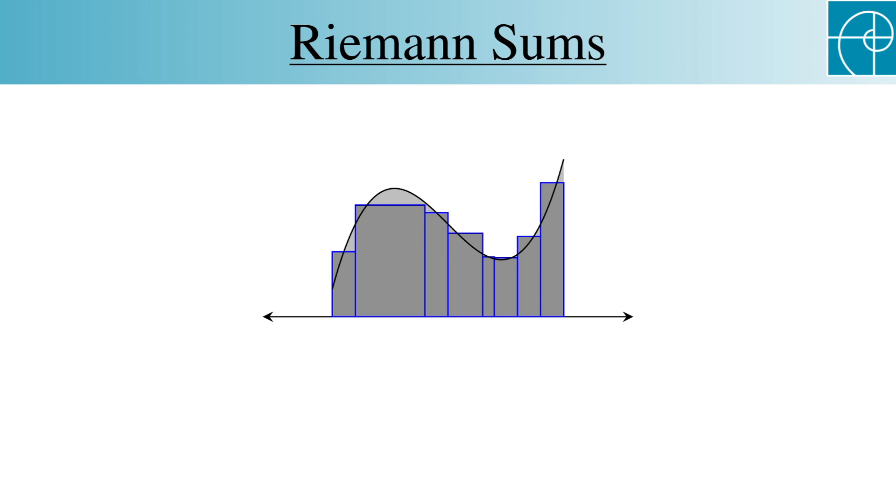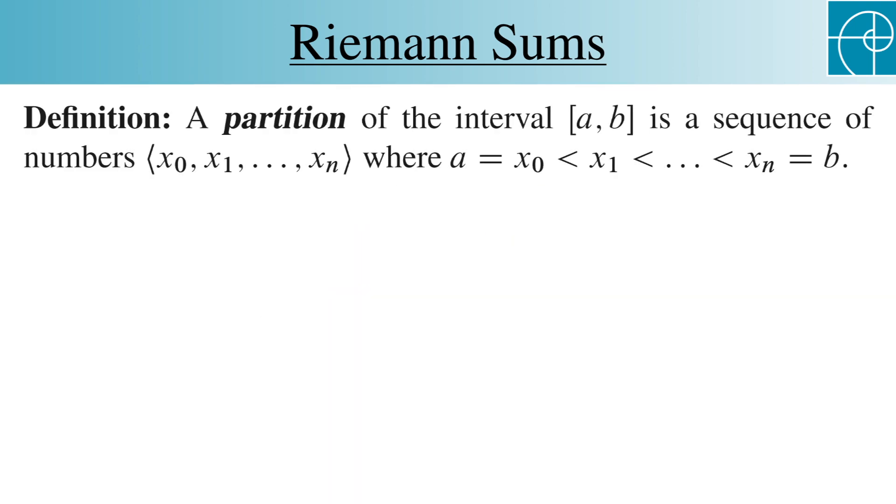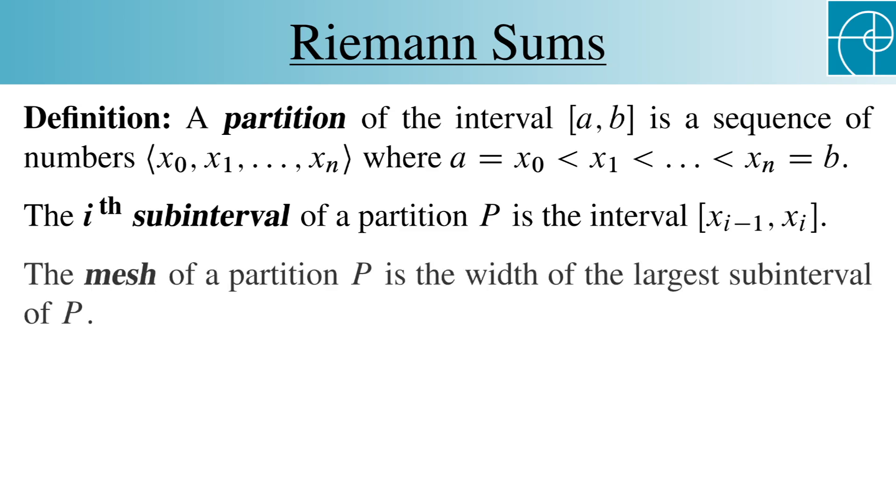To do this, let's introduce some terminology. A partition of the interval ab is a sequence of numbers x sub 0 through x sub n, where x sub 0 is a, and the sequence is increasing up to x sub n, which is b. The i-th subinterval of a partition p is the interval from x sub i minus 1 to x sub i. And the mesh of a partition p is the width of the largest subinterval of the partition.